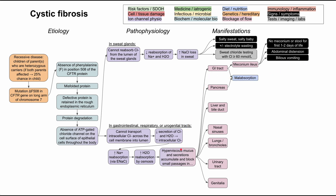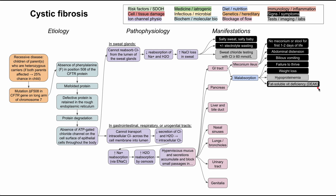Thick secretions also cause malabsorption, and you can also get malabsorption from clogging the tracts from the pancreas. The pancreas is responsible for the exocrine function of producing many digestive enzymes. In a child who has malabsorption, they can end up with failure to thrive — not gaining weight appropriately. In adults, it can lead to weight loss. In all people, it can result in hypoproteinemia since you can't produce proteases for digestion. Fat-soluble vitamins will also be affected — you might be deficient in vitamins D, E, A, and K.